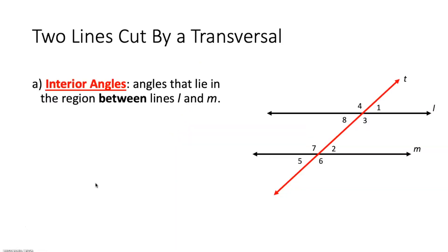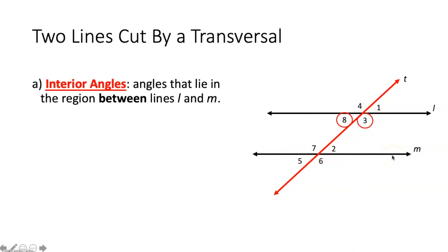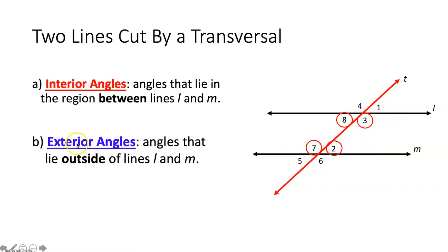Now let's talk about two lines being cut by a transversal. When lines L and M are cut by transversal T, special angles are created. Interior angles lie in the region between lines L and M — those would be angles 8, 3, 7, and 2. Exterior angles lie outside of lines L and M — angles 5, 6, 4, and 1 would be your exterior angles.